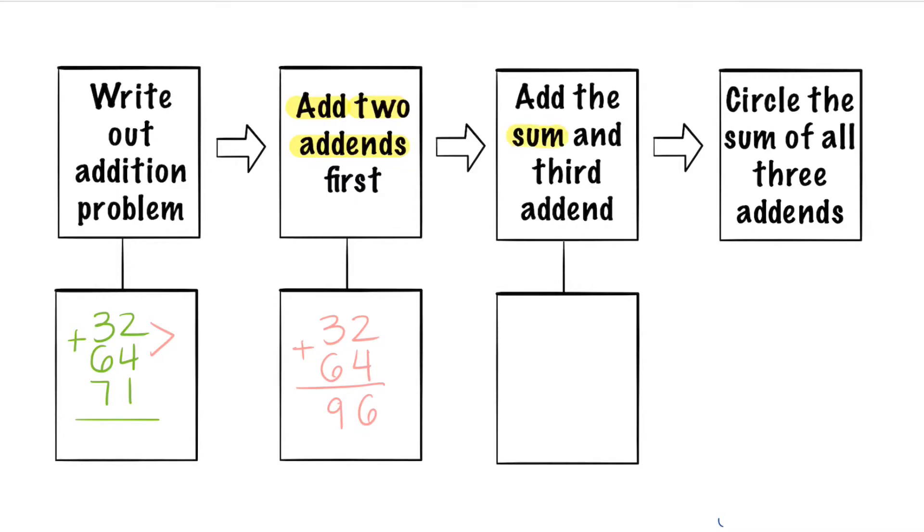Step three says to add the sum which was 96 and the third addend which is 71. Let's go ahead and write 96 which is our sum so far and then we're going to add our third addend which is 71. 6 plus 1 makes 7, 9 plus 7 makes 16.